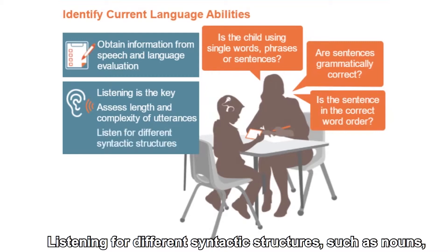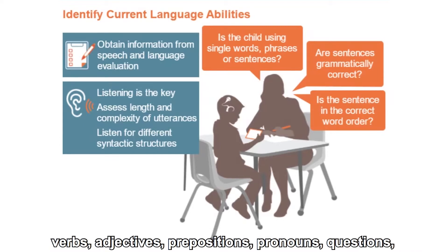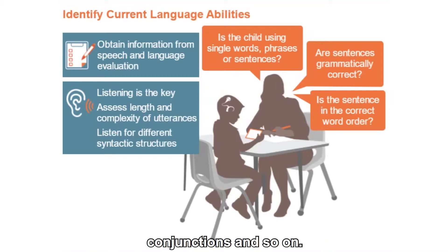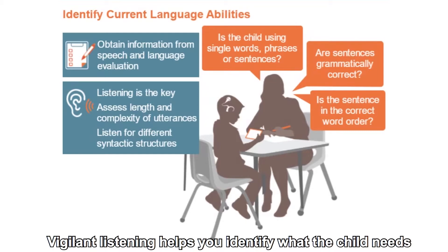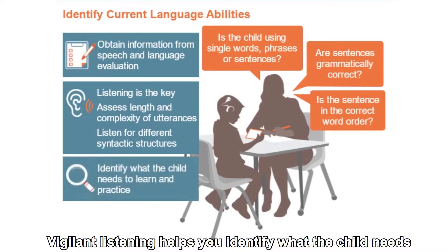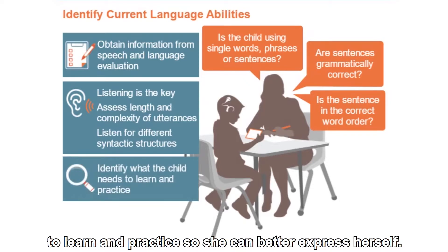Listening for different syntactic structures such as nouns, verbs, adjectives, prepositions, pronouns, questions, conjunctions, and so on. Vigilant listening helps you identify what the child needs to learn and practice so she can better express herself.